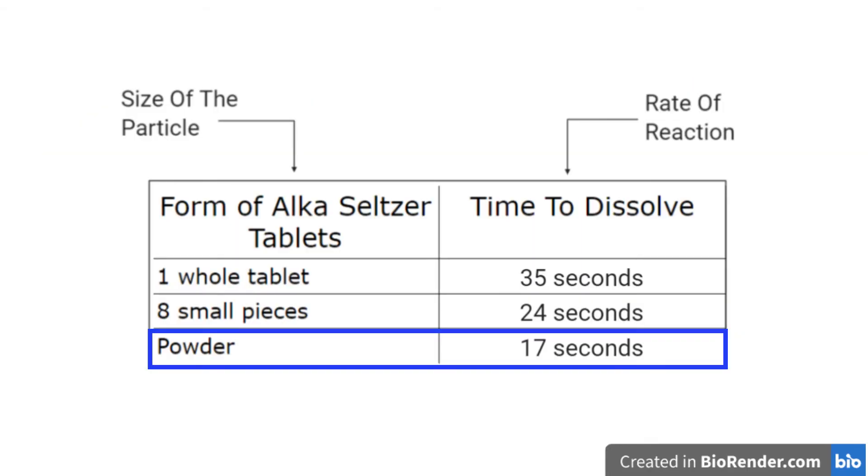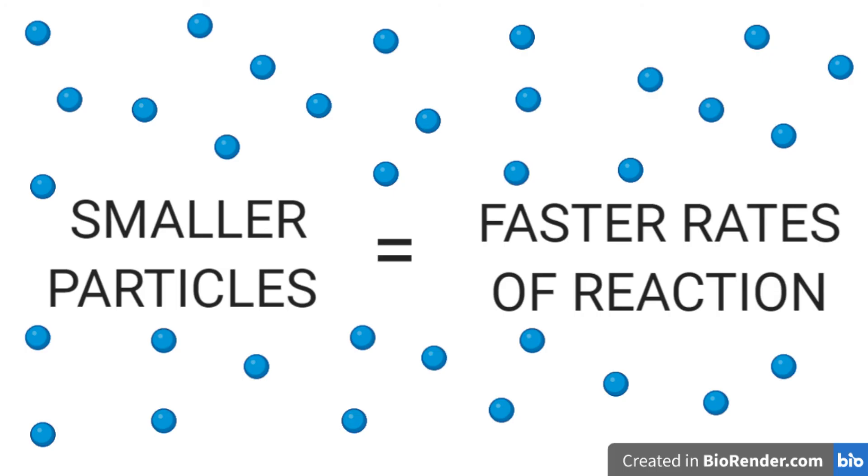Let's take a look at the table we filled along the experiment. Don't worry if your results don't match with my results in the table. As long as you are in a close range, you should be alright. As you can see, the powder form of the Alka-Seltzer tablet had the fastest rate of reaction. This is because we broke the tablet into smaller particles, increasing the surface area. In conclusion, the smaller the particle size is, the faster its rate of reaction will be.